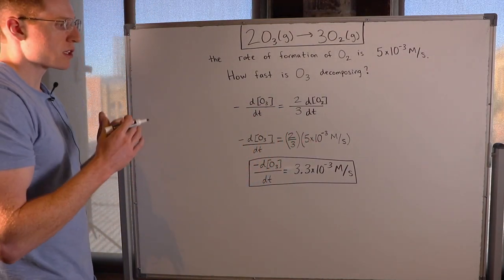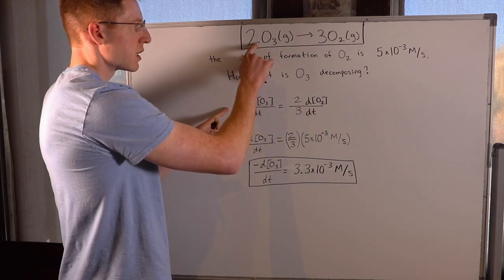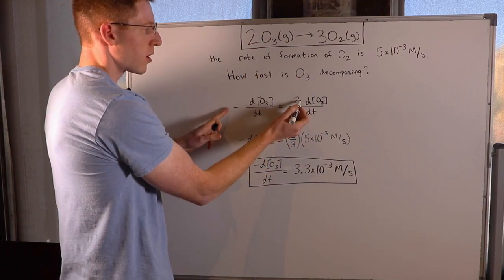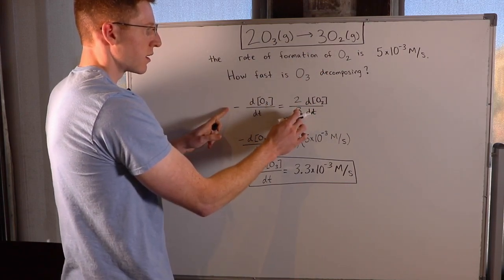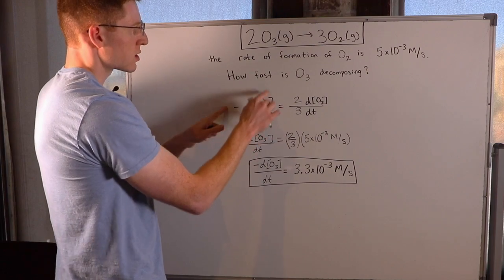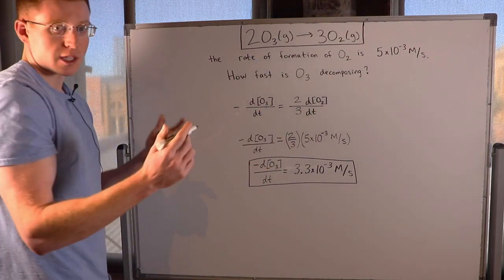And if you watch my video on how to solve relative rates equations, you'll see that I take the lowest coefficient here, which was 2, put that in the numerator, and then I put this coefficient in the denominator here. And since O3 had the lowest coefficient, I just put a 1 in front of here. So this is my relative rates equation.